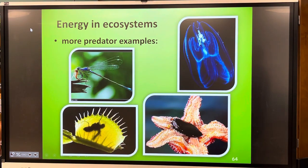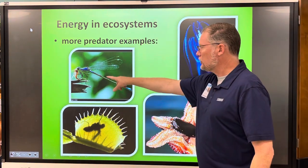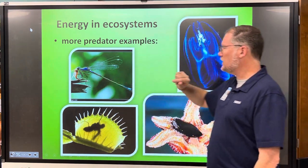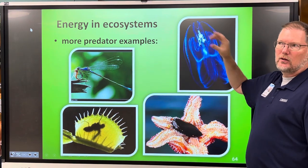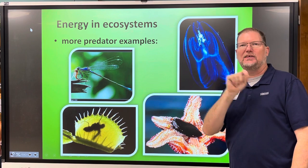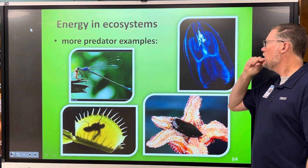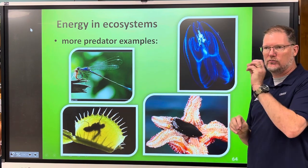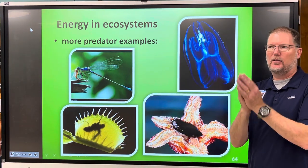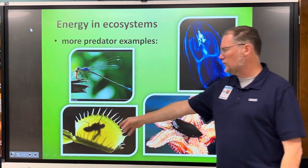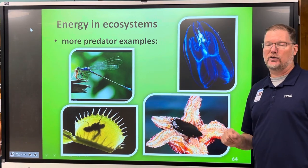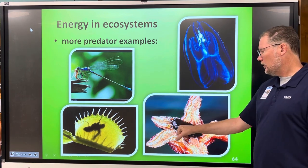More carnivore and predator examples on page nine: a damselfly, which is a smaller version of a dragonfly, eating another insect; a Physophore — a type of jellyfish that uses its stinging cells to eat smaller organisms; the Venus flytrap, which can trap anything that fits inside its adaptive leaves and breaks it down with digestive enzymes; and a sea star eating a bivalve mollusk — bivalve means two shells.